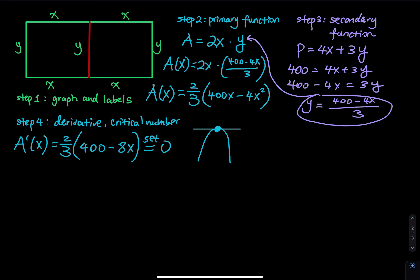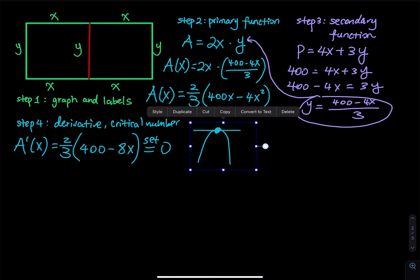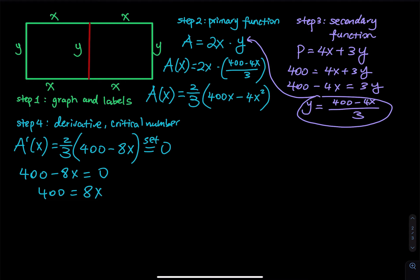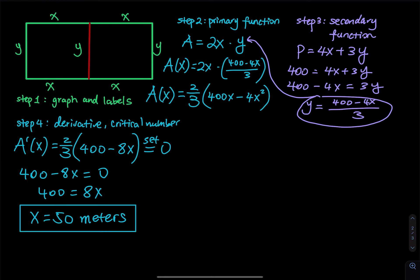A horizontal tangent line means it's either a minimum or maximum. To solve for x, multiply both sides to remove the fraction: 400 minus 8x equals 0, so 400 equals 8x, and 400 divided by 8 equals 50. So x equals 50 meters. This is not our final answer yet, because we still have to prove the area is maximized when x equals 50. At this point, this is a critical number.